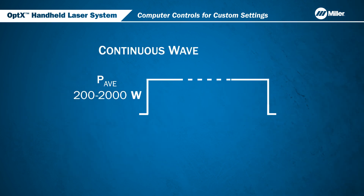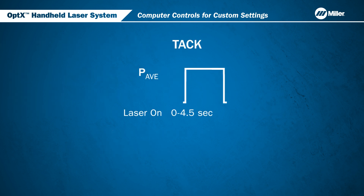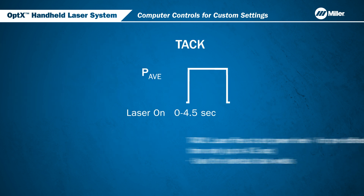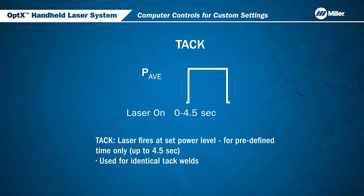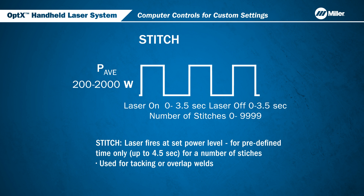First, Continuous Wave mode fires the laser at a set power level all the time while the trigger is pressed. Next is Tack Mode — in this mode, the laser fires at a set power level for a predefined time up to four and a half seconds. This is used for identical tack welds. Stitch Mode fires the laser at a set power level for a predefined time up to four and a half seconds for a number of stitches. This can be used for tacking or overlap welds.